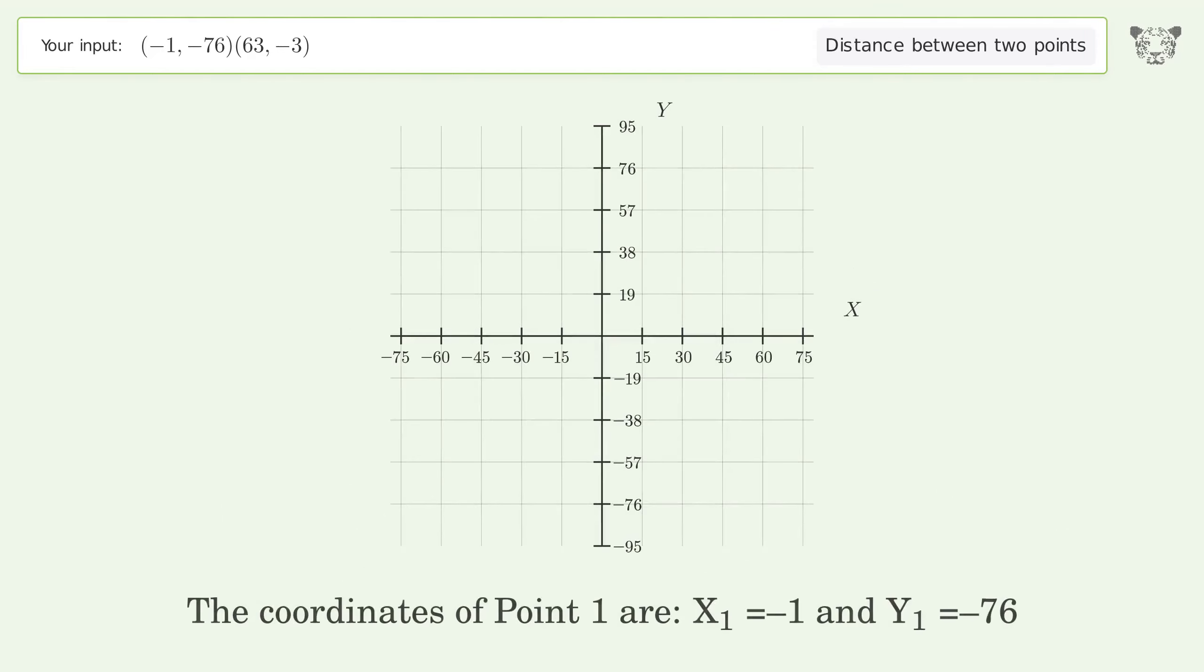The coordinates of point 1 are x1 equals negative 1 and y1 equals negative 76. The coordinates of point 2 are x2 equals 63 and y2 equals negative 3.